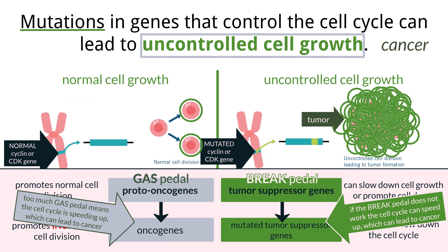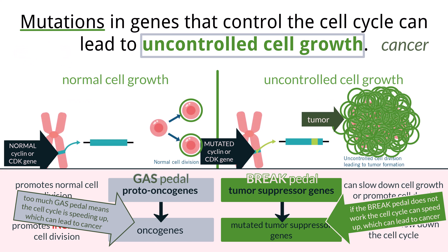Some mutations in tumor suppressor genes can happen during your lifetime, but others can be inherited. Sometimes, there is no mutation, but the gene is still unable to function properly. This may be due to silencing of the gene. Silencing can occur when a chemical molecule is added, such as a methyl group. This is called methylation.